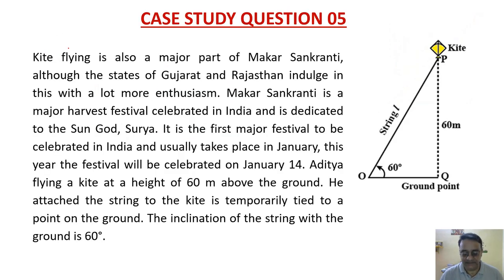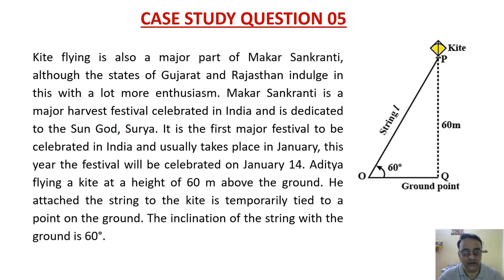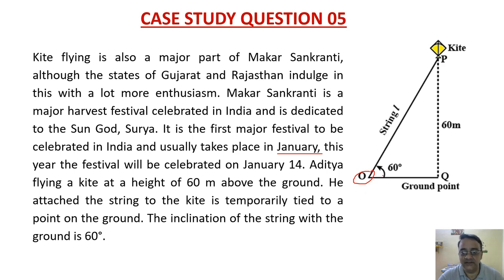Case study question 5: Kite flying is a major part of Makar Sankranti, especially in Gujarat and Rajasthan. This festival is dedicated to the sun god Surya and usually takes place in January. Aditya is flying a kite at a height of 60 meter above the ground, with the string tied to a point on the ground and inclined at 60 degrees.